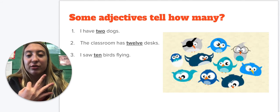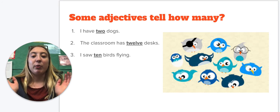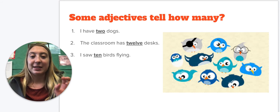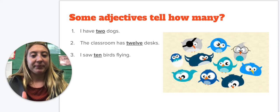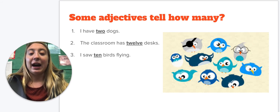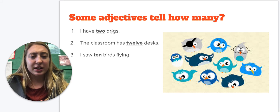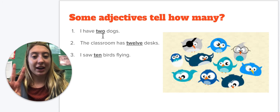But it can also tell how many. So when we ask what kind, it goes over color, shapes, and size. But if I go ask the question how many, it's going over numbers. So I have two dogs. How many dogs? Two. So numbers are going to be also our adjectives.